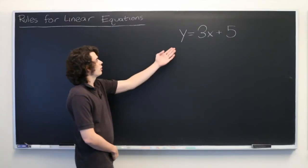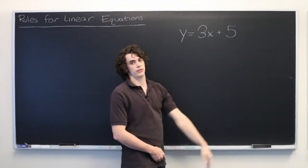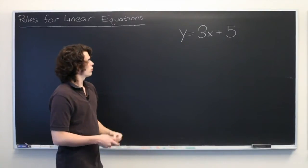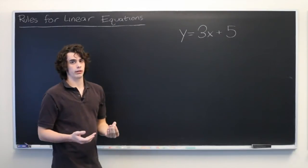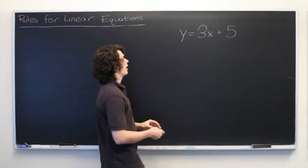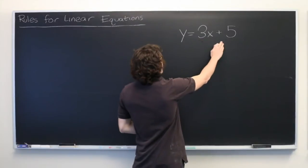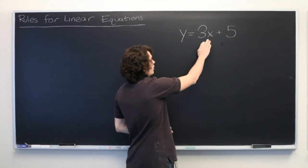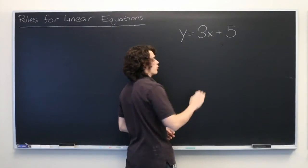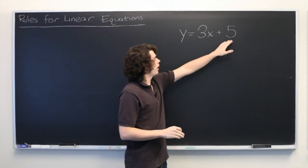So here we have linear equation y equals 3x plus 5. First, we want to think about what does it mean for an equation to be linear. What this means is that on the right-hand side of the equation, we can only have our independent variable raised to the first power in constants.